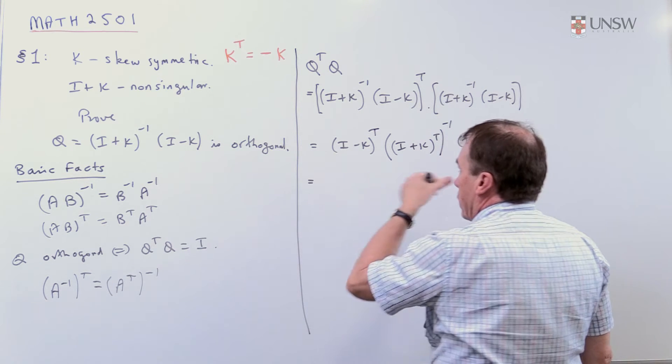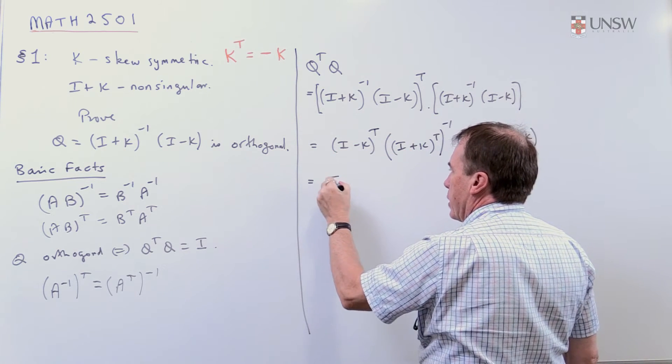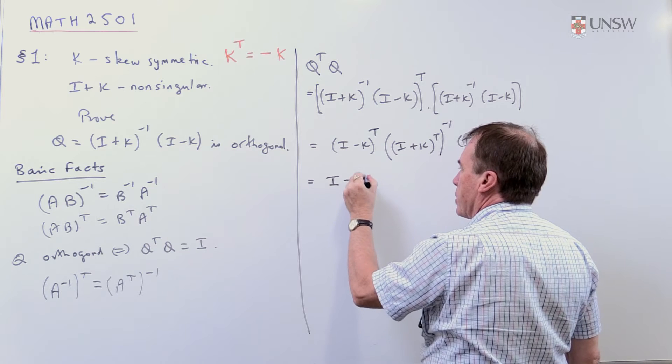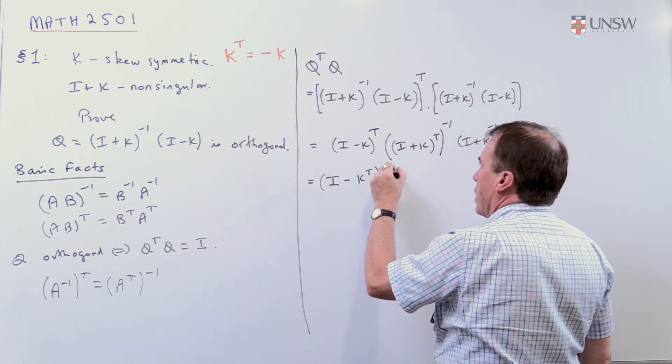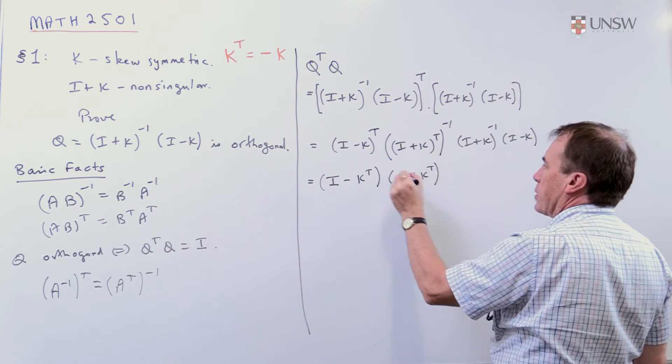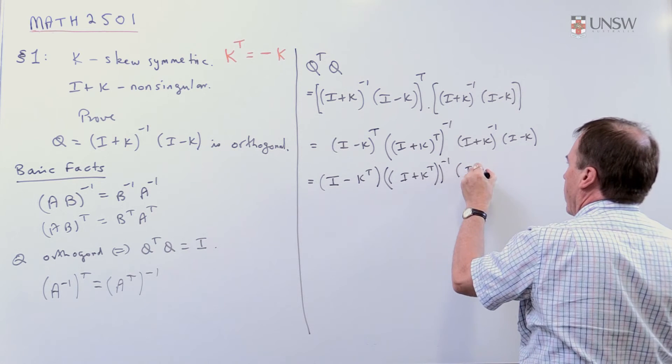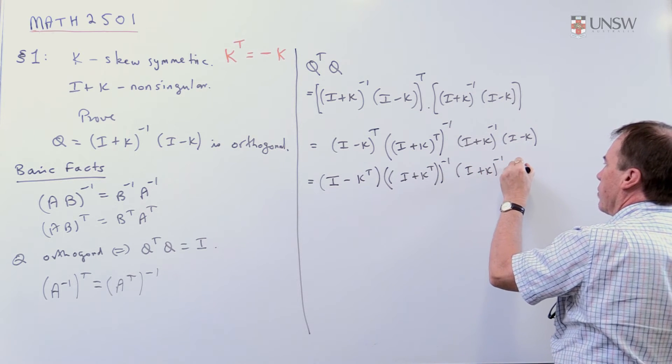Okay. Now, I've got to do something with these transposes. So, I transpose is just the identity matrix. K transpose is K transpose. And this is I plus K transpose, and that's still all inverse. And here I've got I plus K inverse I minus K.